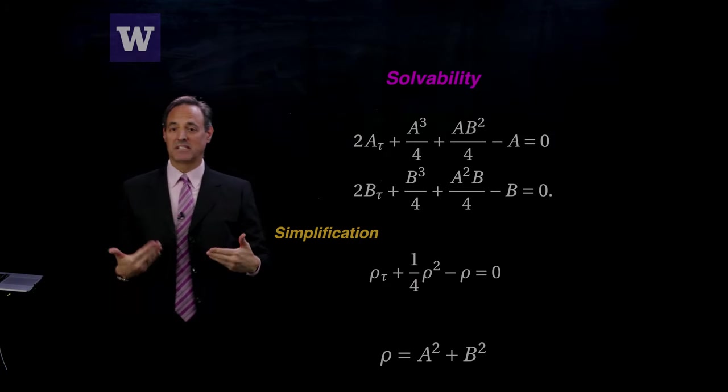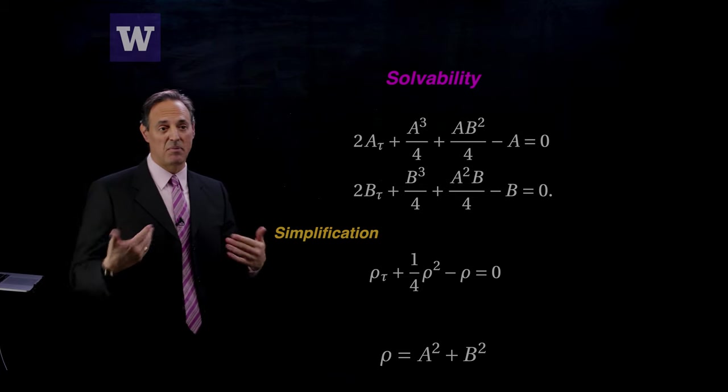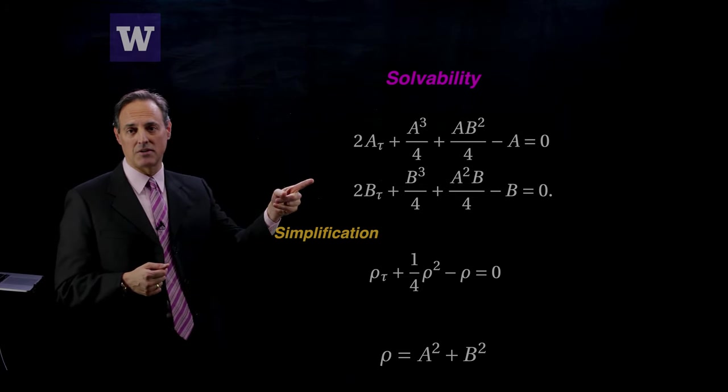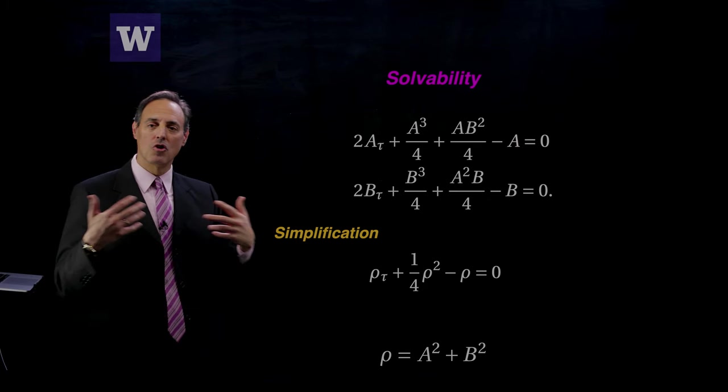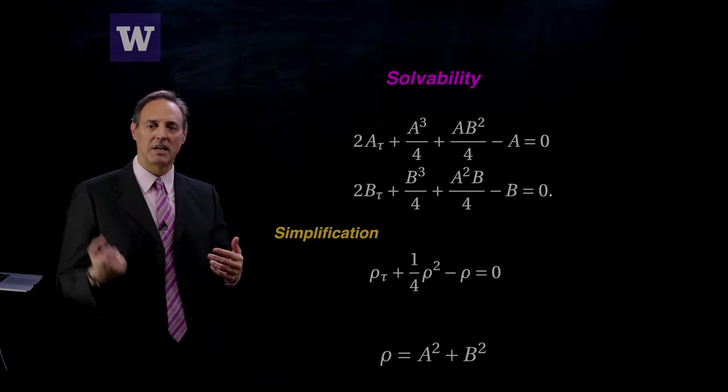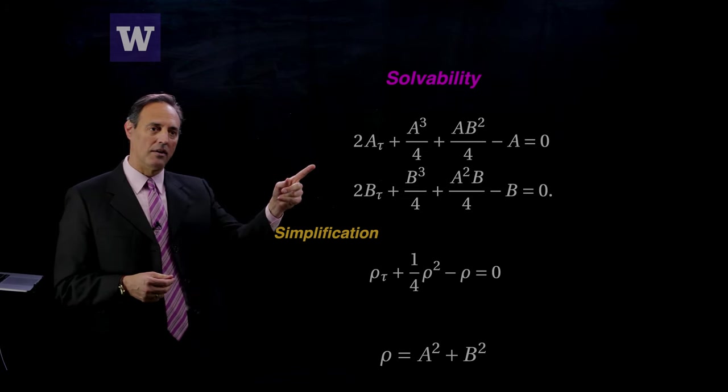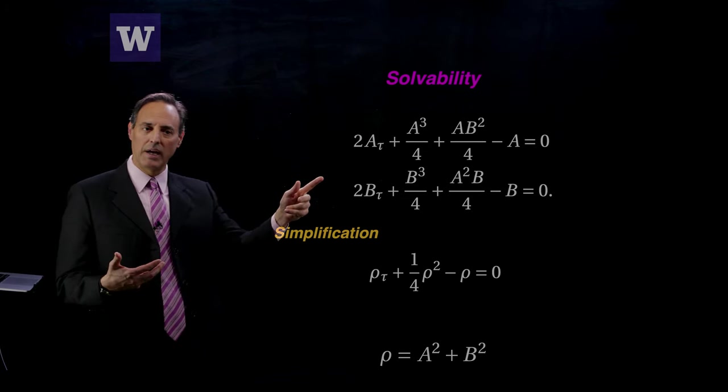I have this flexibility because a is a function of tau, b is a function of tau. If I make them satisfy these evolution equations, then I have no problems with solvability. I've removed the secular growth terms that are possible. So there they are.